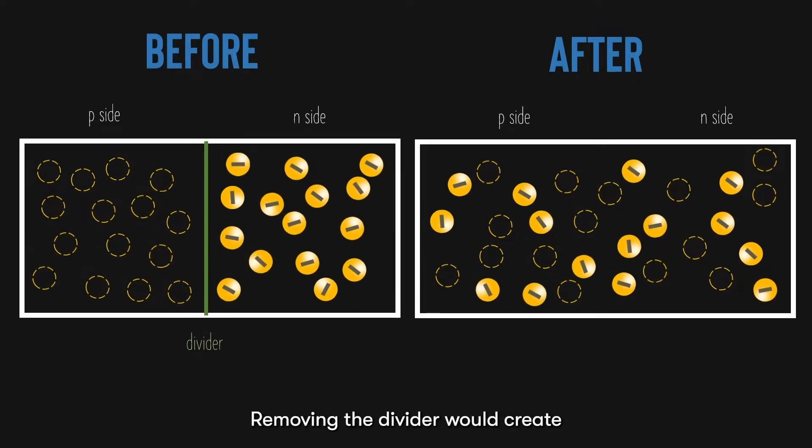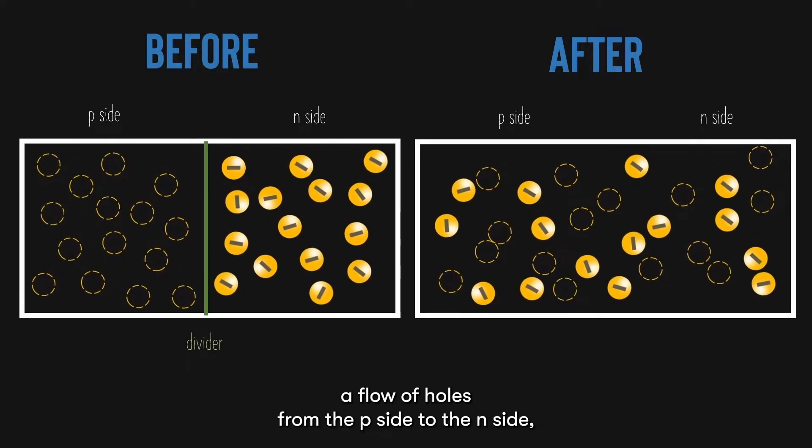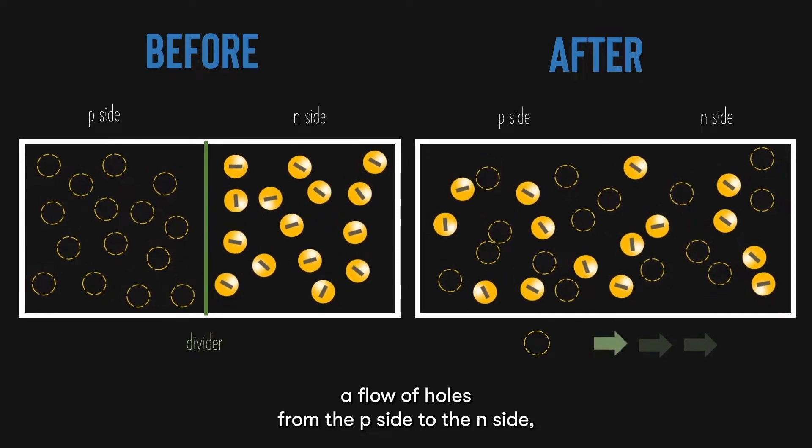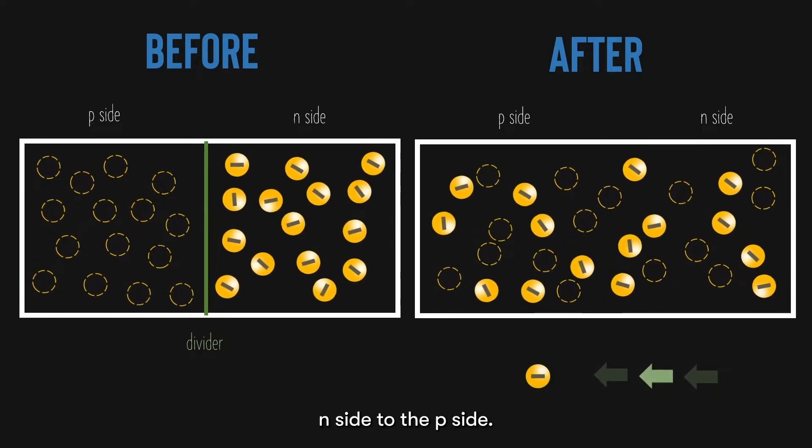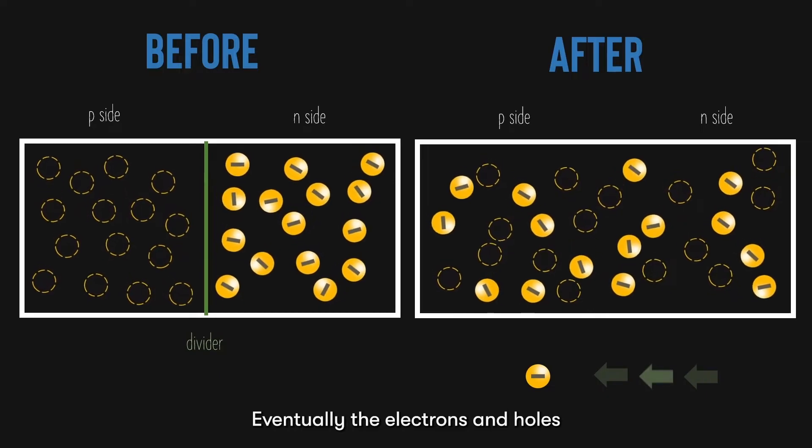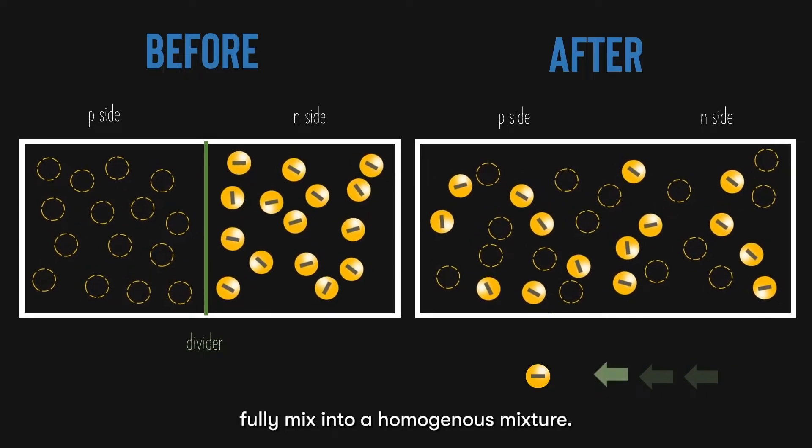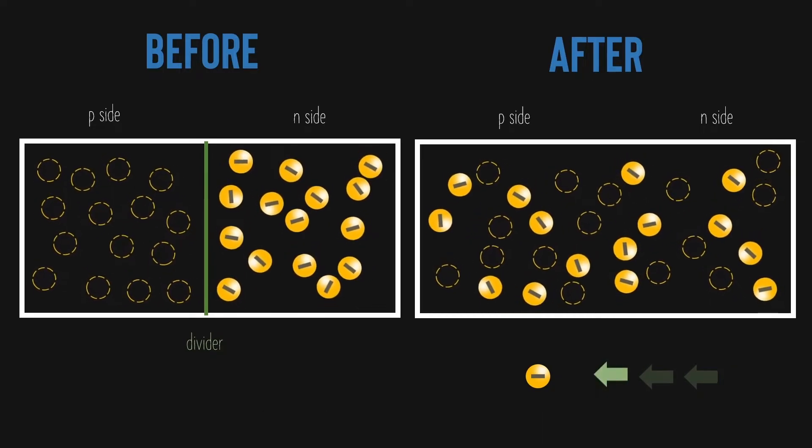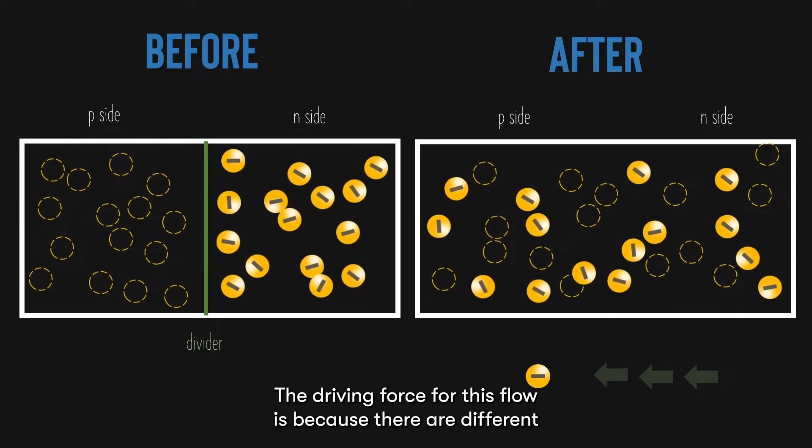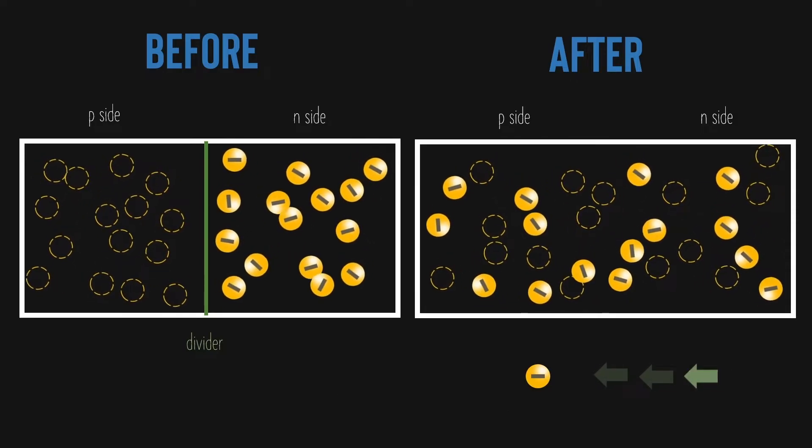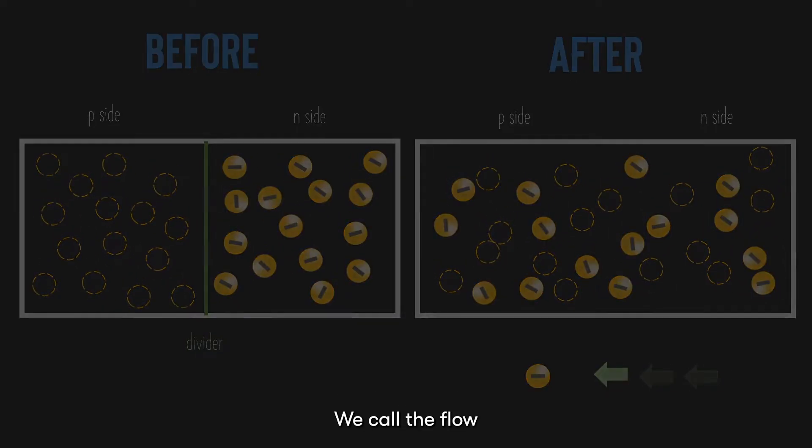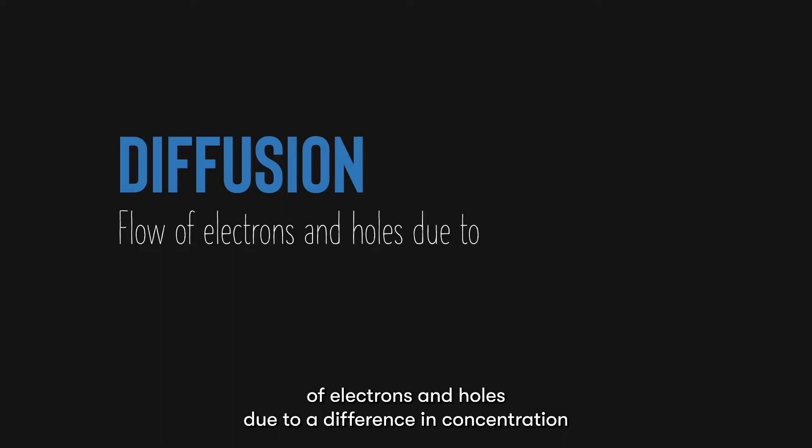We get something like this. Removing the divider will create a flow of holes from the p-side to the n-side, and flow of electrons from the n-side to the p-side. Eventually, the electrons and holes fully mix into a homogenous mixture. The driving force for this flow is because there are different concentrations of electrons and holes on both sides. We call the flow of electrons and holes due to a difference in concentration, diffusion.